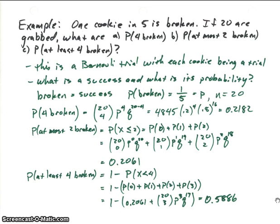Let's do another example. We've got a really sad situation: one cookie in five is broken. Suppose we're going to grab 20 cookies. We want to know the probability that exactly four will be broken, the probability that at most two will be broken, and the probability that at least four will be broken. We'll assume cookies break randomly and independently, so this is a Bernoulli trial where each cookie is a trial.